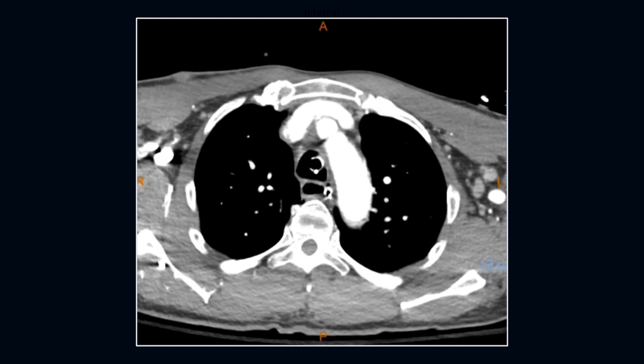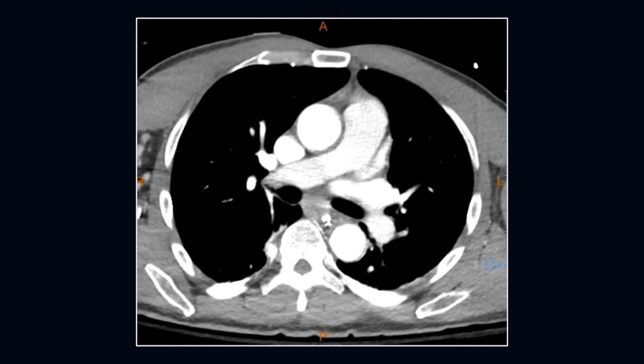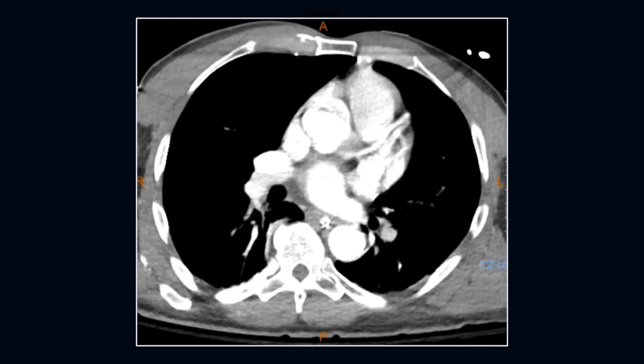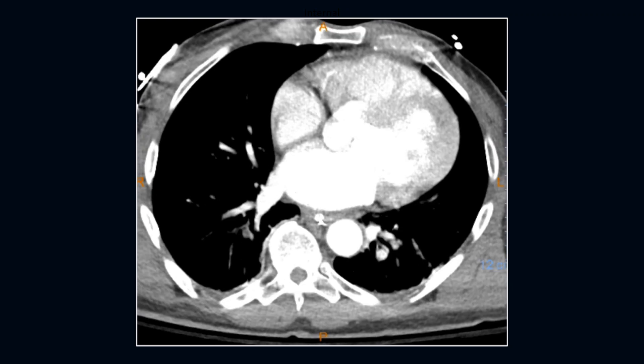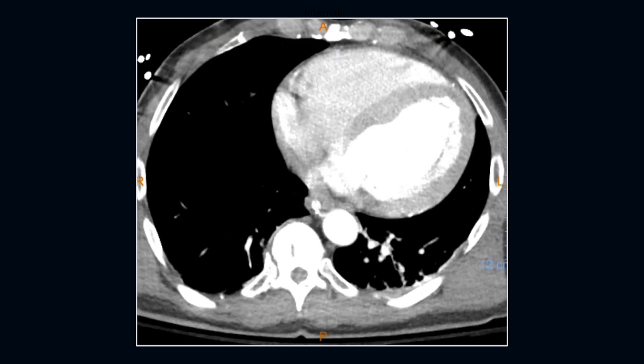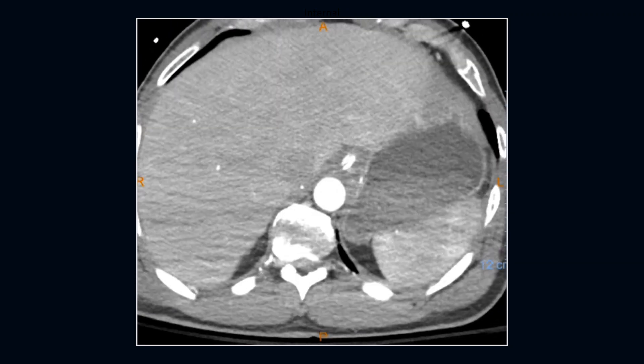This case is a 51-year-old male on ventilator who pulled out his dialysis catheter. This case had suboptimal bolus timing; however, the pulmonary artery density was adequate.